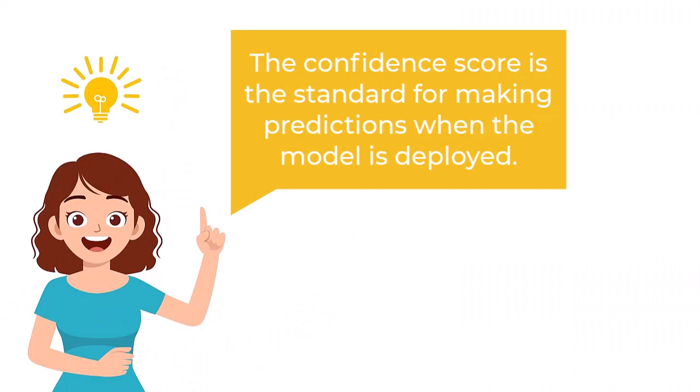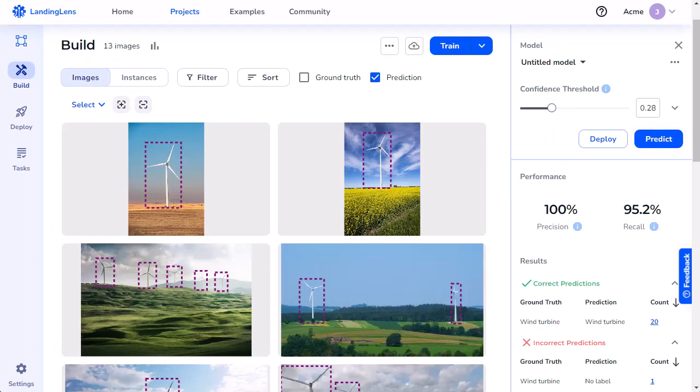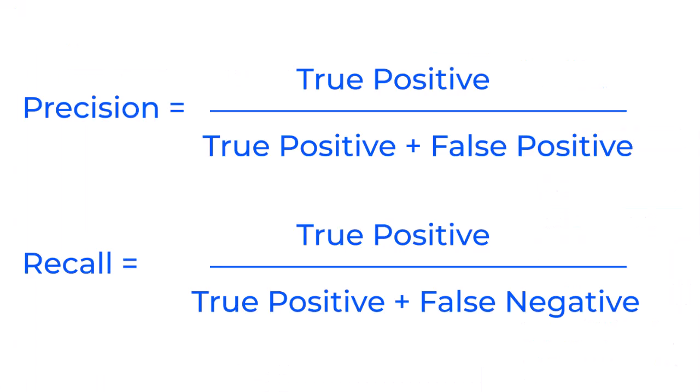Ultimately, the confidence score is the standard for making predictions when the model is deployed. The next set of metrics is precision and recall. Both of these metrics represent mathematical equations. To understand what this means, let's take a look at what each term in these equations represents in my use case.